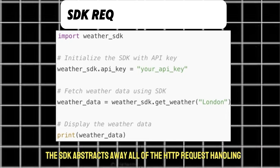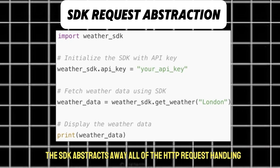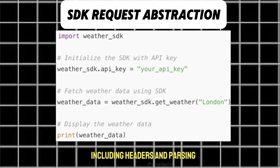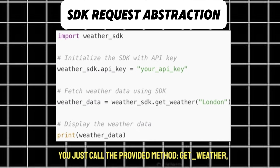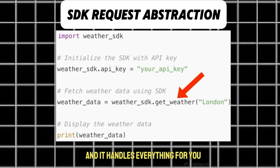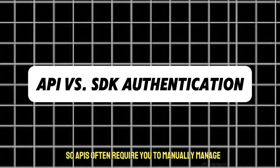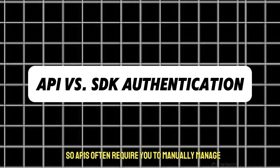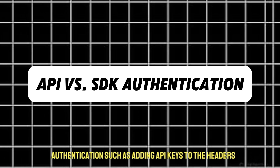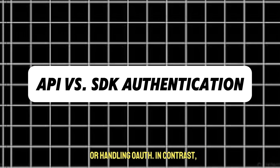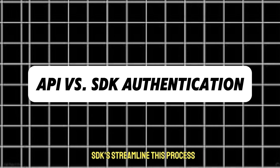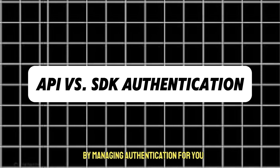With the SDK, it abstracts away all of the HTTP request handling, including headers and parsing. You just call the provided method — get weather — and it handles everything for you. So APIs often require you to manually manage authentication, such as adding API keys to the headers or handling OAuth. In contrast, SDKs streamline this process by managing authentication for you.